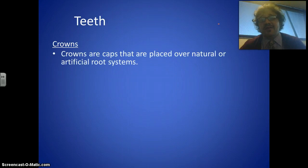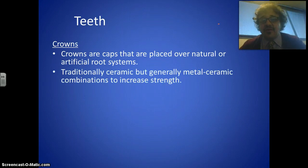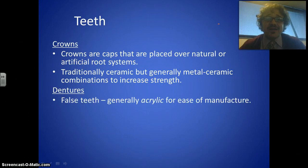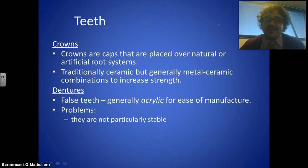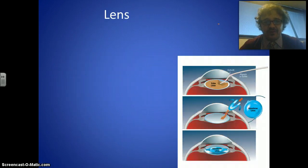For teeth, crowns are caps placed over either a natural or artificial root system. An artificial root is a screw that goes into the jaw. Traditionally they were ceramic, but ceramics are a bit brittle, so now metal-ceramic combinations are used to increase strength. Dentures are false teeth, generally made from acrylic for ease of manufacture, but they have problems — they're not particularly stable, don't always look natural, and they allow the jawbone to resorb over time.